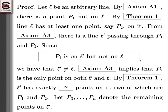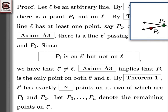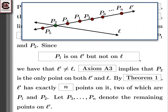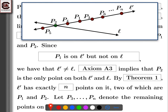Let me put a picture up to show where we are. We started with line L and point P1 not on L, then got P2 on L, then took line L prime through P1 and P2, and noted there must be additional points on L prime so it has a total of n points. One of them is P2 which is on L, and the others are not on L, since L and L prime can only have one point in common — namely P2.